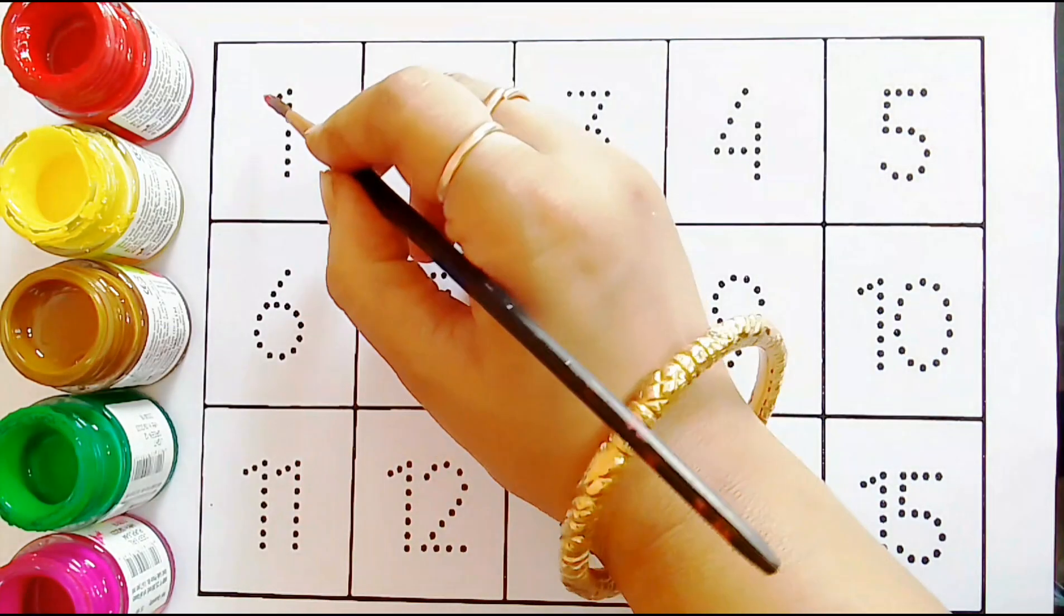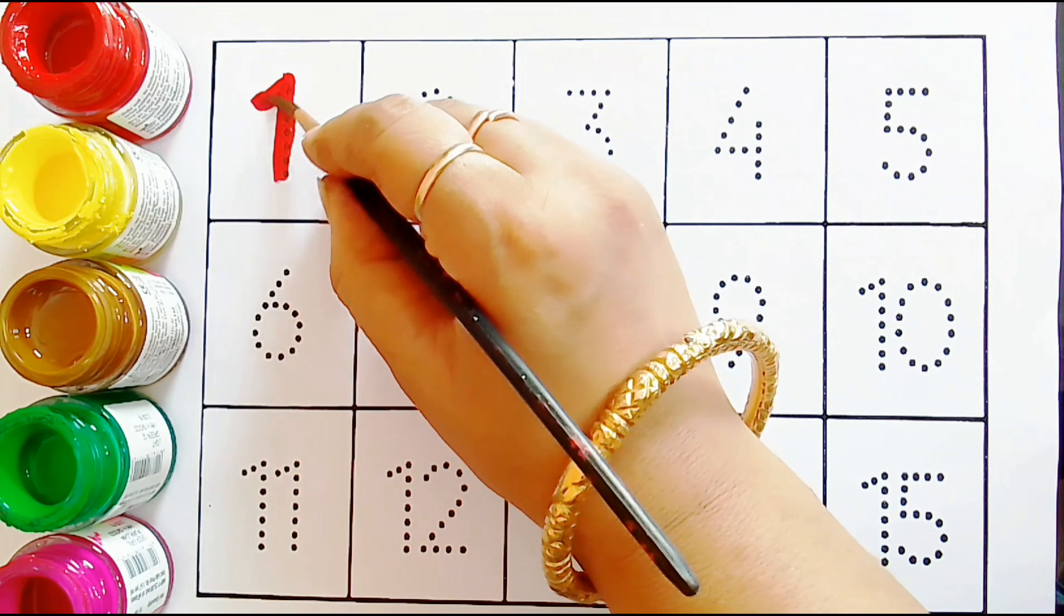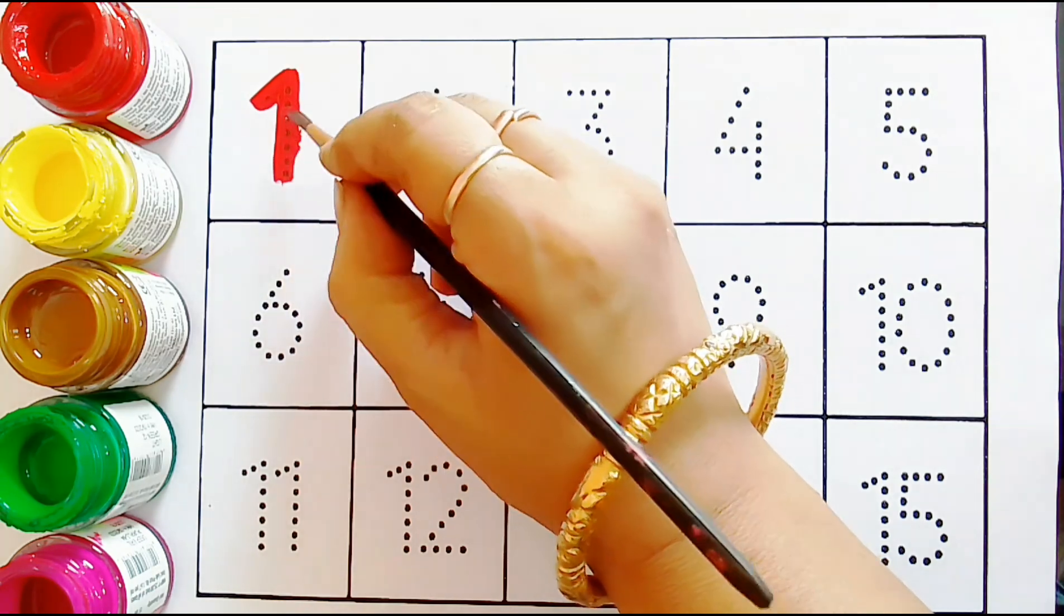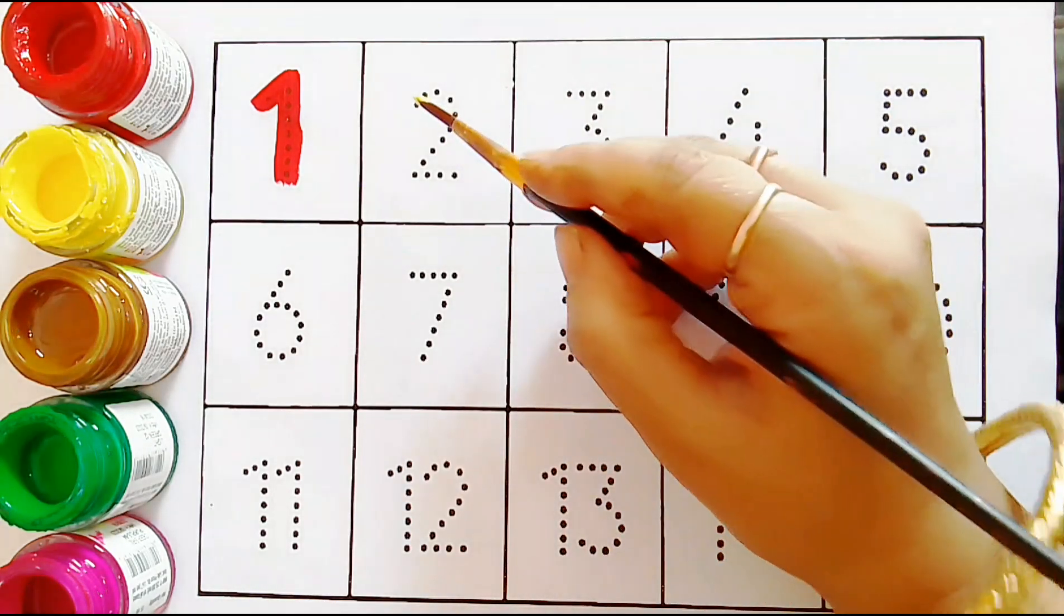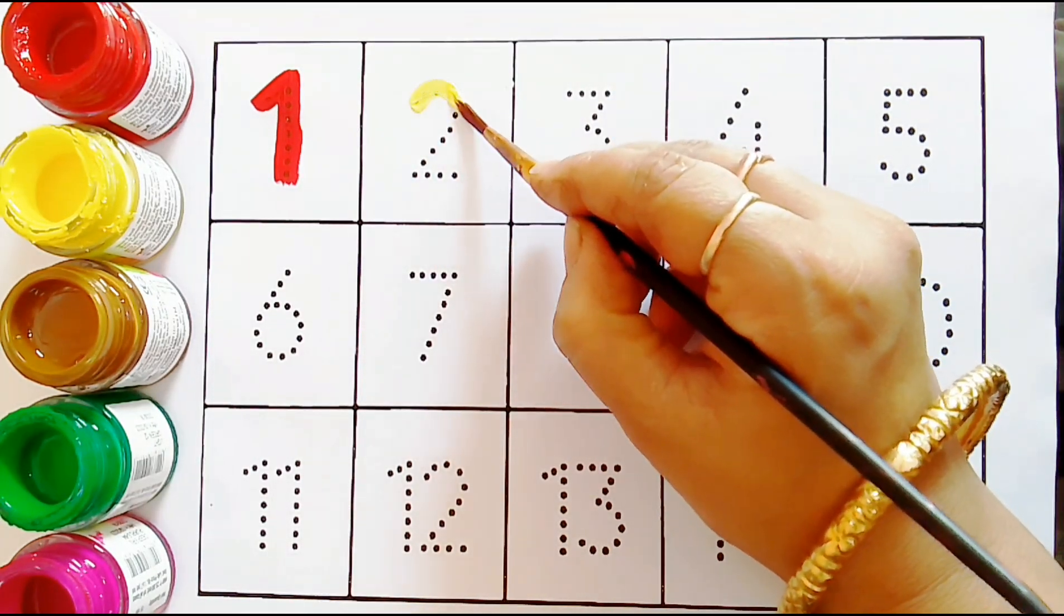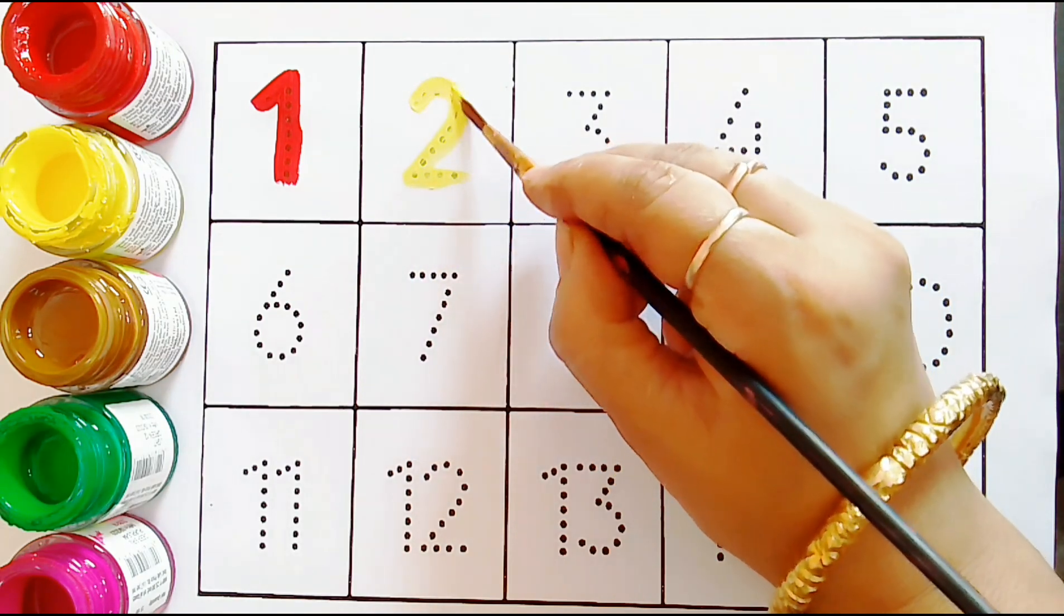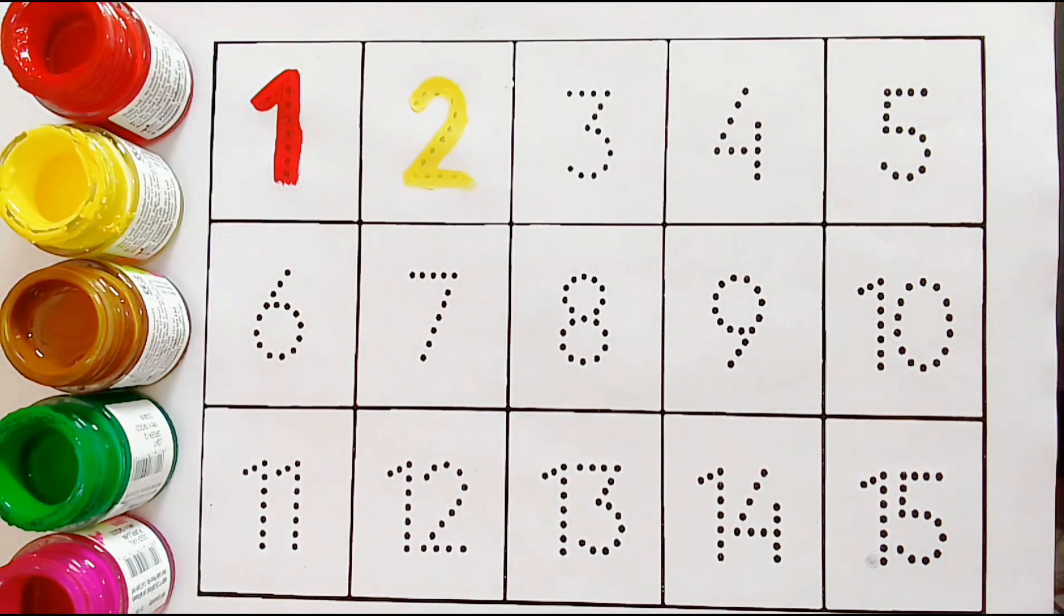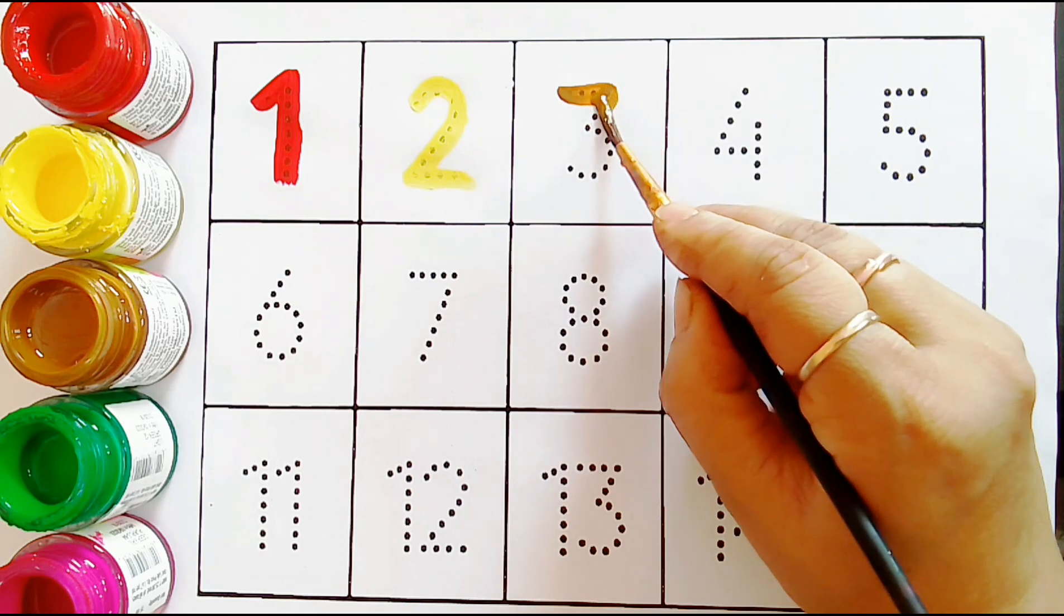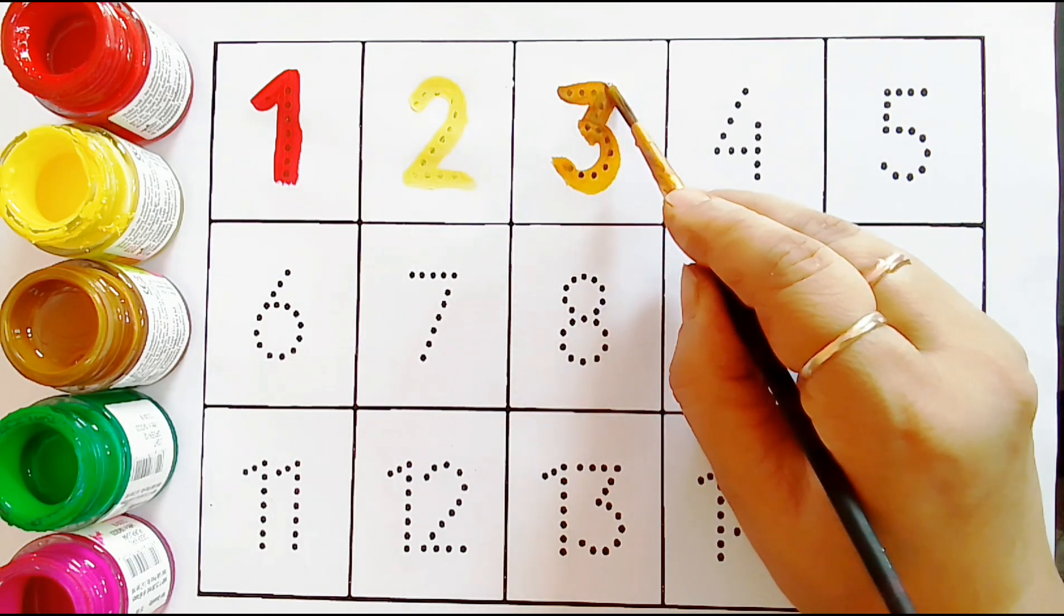Numbers. One, one. Two, two. Yellow color, two. Three, three. Brown color, three.